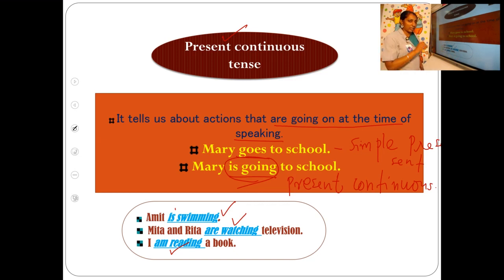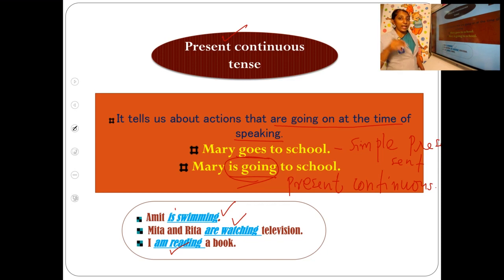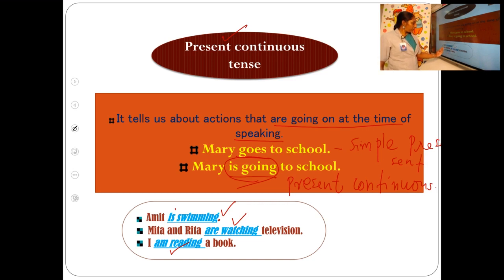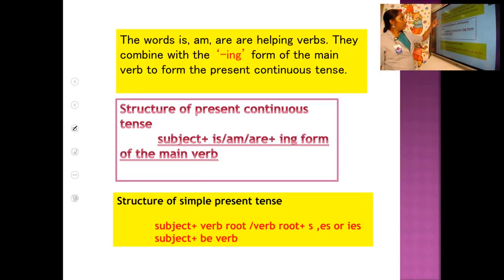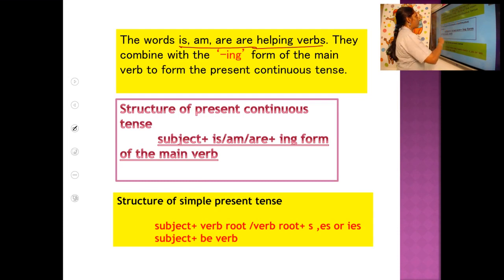Sometimes verbs contain more than one word. Here the verb contains two words. Is, am, are — you already learned they are be verbs. If you want to make a continuous tense you need the help of these verbs. Without them — 'Amit swimming,' 'I reading a book' — those sentences are not correct. So be verbs act as helping verbs; they help the subject and the main verb because these main verbs cannot stand alone.